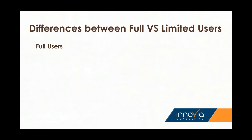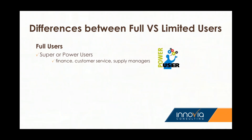A full user is the license you want for anyone doing a lot of functionality within Business Central — using a lot of the feature-rich business application functionality. Examples of full users would be people in customer service, finance, controllers, and supply chain managers. These users are often referred to as power or professional users and spend the majority of their day within Business Central — processing a lot of transactions, looking up data, doing posting. Anyone that needs to post needs to be a full user. If someone is entering a purchase quote that becomes a purchase order and you want them to post it, they need to be a full user.